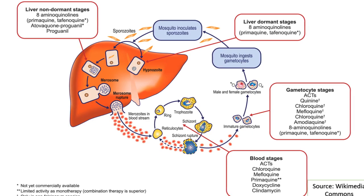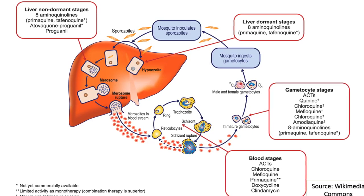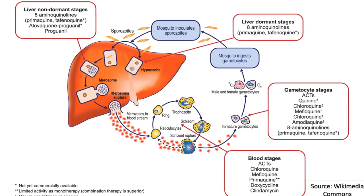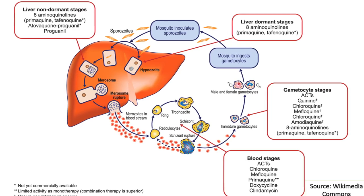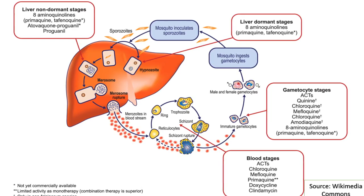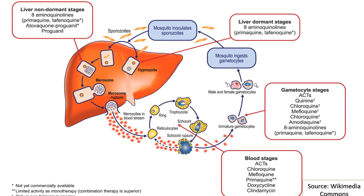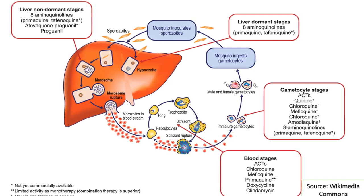Number 14. Why does malaria relapse in some cases? Malaria relapse occurs in Plasmodium vivax and Plasmodium ovale infections because the parasites can form dormant liver stages called hypnozoites. These hypnozoites can remain in the liver for months or even years without causing symptoms, but they can reactivate later, releasing new parasites into the bloodstream and causing a relapse of the disease.